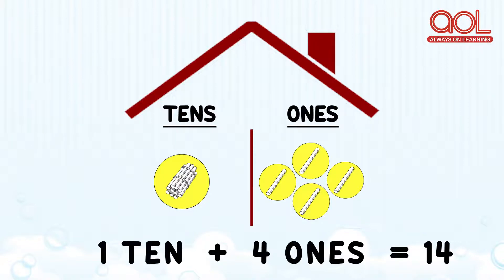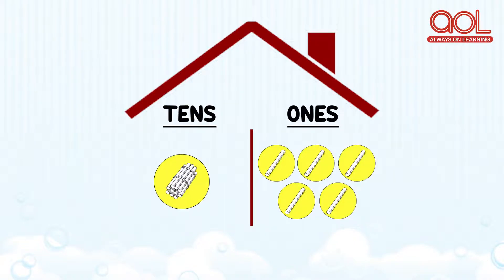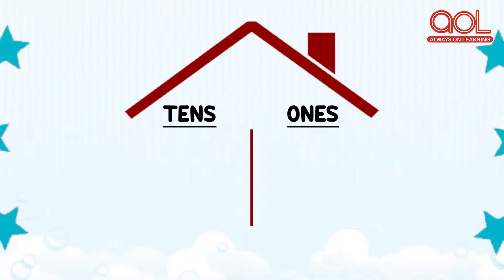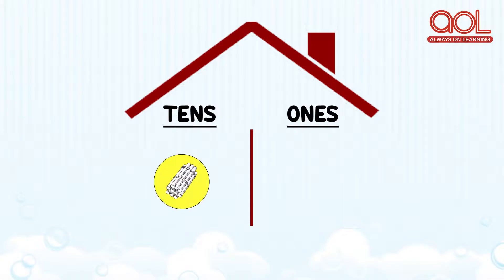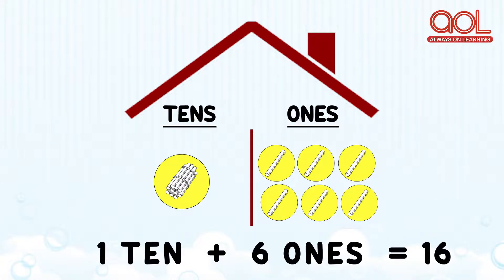Let's see the next number. We have one ten and six ones. One ten and six ones make number sixteen.